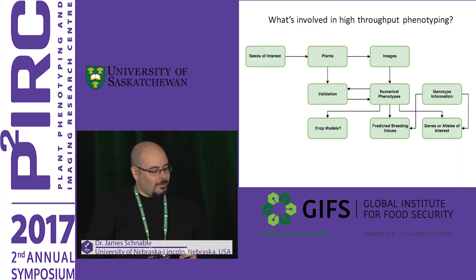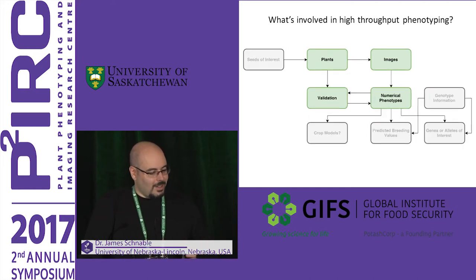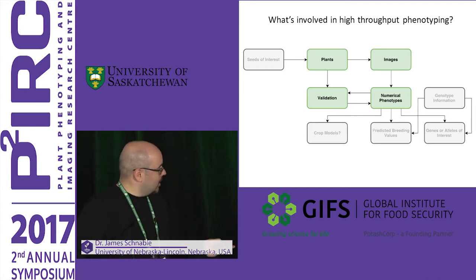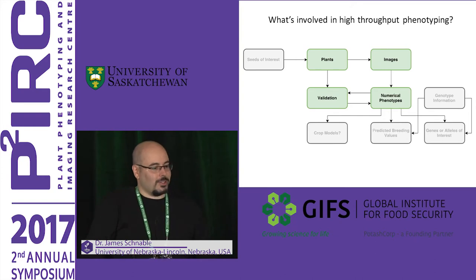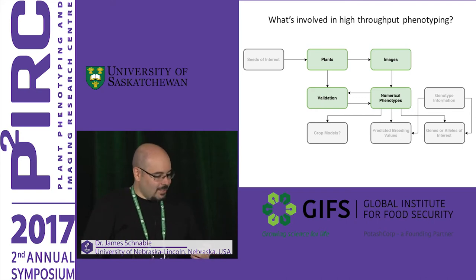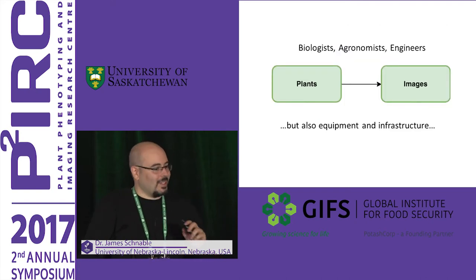I have here a complicated flowchart of how high-throughput phenotyping works. You start with plants, go from plants to images, get numerical phenotypes, and then show that these phenotypes are actually predicting something about the plants — ideally something that breeders care about. There are lots of things you can measure that probably have no redeeming value, so it's important to validate.